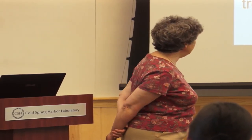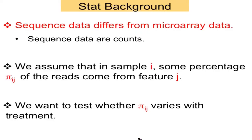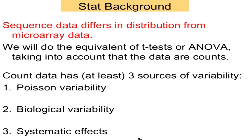The stats background is this: we're working with counts. We assume that in sample i, π_ij of the reads come from feature j, and what we want to know is whether this percentage depends on the treatment — which could be genotype or treatment versus control. We're going to do the equivalent of T-tests or ANOVA tests, but we're going to take into account that the data are counts. Count data has three sources of variability: Poisson variability, biological variability, and the systematic effects due to treatment.